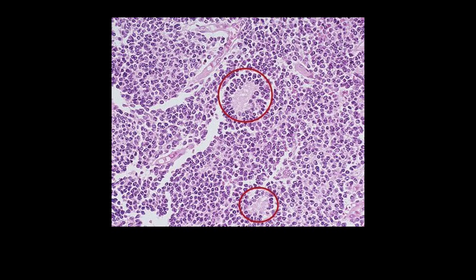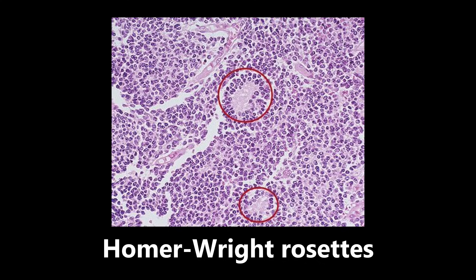This picture is a bit more difficult, but still high yield. It's an example of Homer Wright rosettes. These are circular groupings of dark tumor cells surrounding pale neurofibrils, as we see right here. This is seen in two primary conditions: neuroblastoma and medulloblastoma. So if you see an image like this, those are the two things you want to be thinking about — neuroblastoma and medulloblastoma.